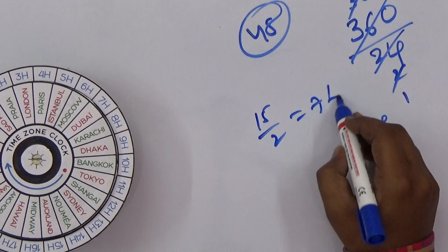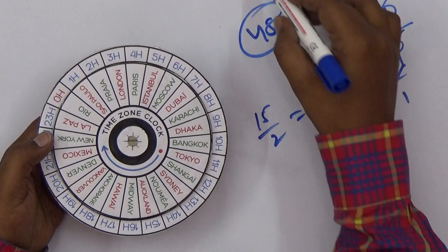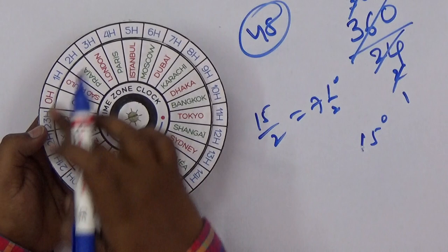You can take a larger number of countries according to your requirements. This project demonstrates the time zone clock for countries with exactly one-hour gaps between them.